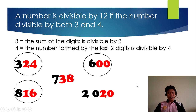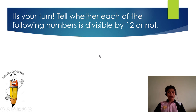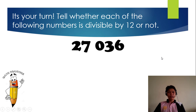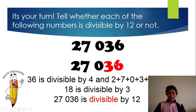Do you have any questions? Next, it's your turn. Tell whether each of the following numbers is divisible by 12 or not. Start. 520: 20 is divisible by 4, but 5 plus 2 is 7, which is not divisible by 3. Therefore it is not divisible by 12. Next, 27,036: 36 is divisible by 4. Adding the digits: 2 plus 7 is 9 and 3 plus 6 is 9, 9 plus 9 is 18, 1 plus 8 is 9, divisible by 3. Therefore, since it is divisible by both 4 and 3, 27,036 is divisible by 12. Excellent.